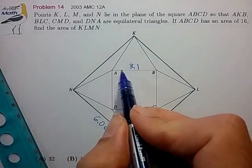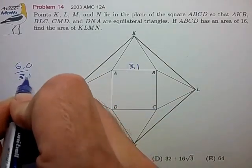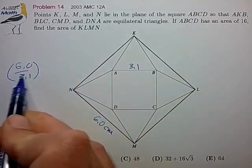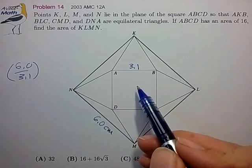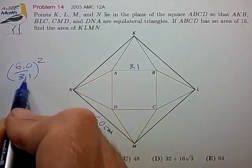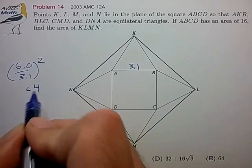So the ratio of the lengths is 6 to 3.1 and that's just a little bit less than a factor of 2. So the ratio of the area of the two squares is the square of this ratio and that's going to be just a little bit less than 4.